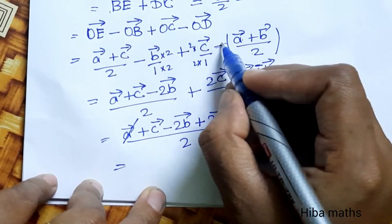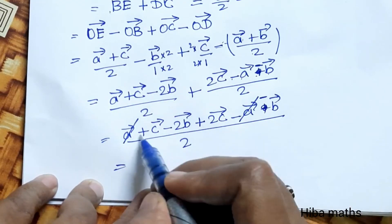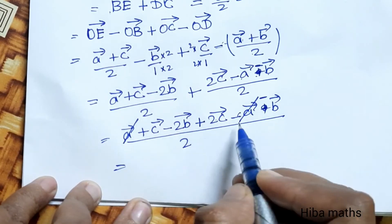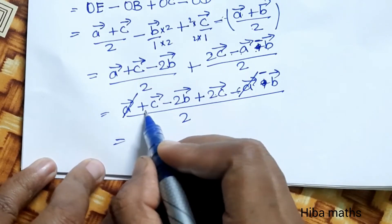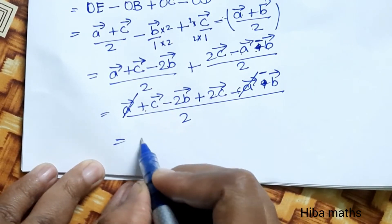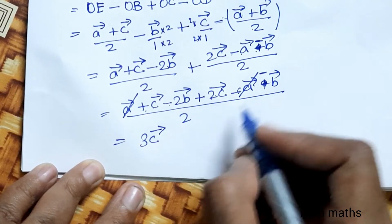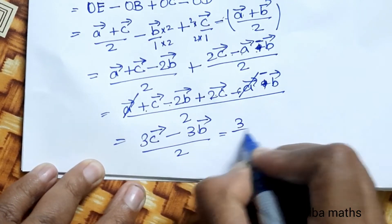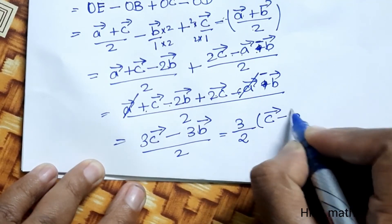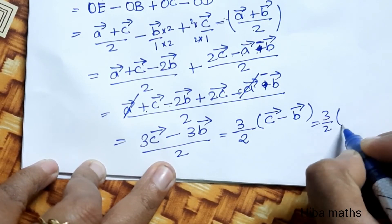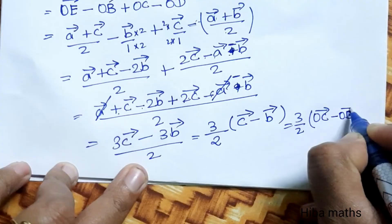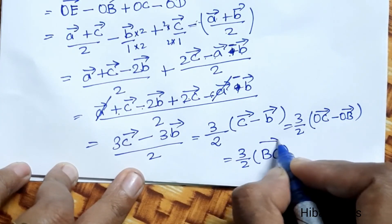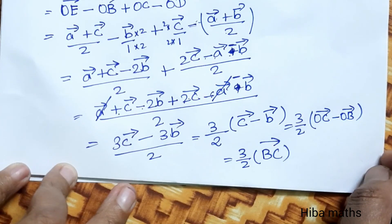Expanding and simplifying: A vector plus C vector minus 2B vector plus 2C vector minus A vector minus B vector, all divided by 2. The A vectors cancel. We get 3C vector minus 3B vector divided by 2, which equals 3 by 2 times C vector minus B vector, equals 3 by 2 times OC vector minus OB vector, equals 3 by 2 BC vector. LHS equals RHS. Thank you so much for watching.